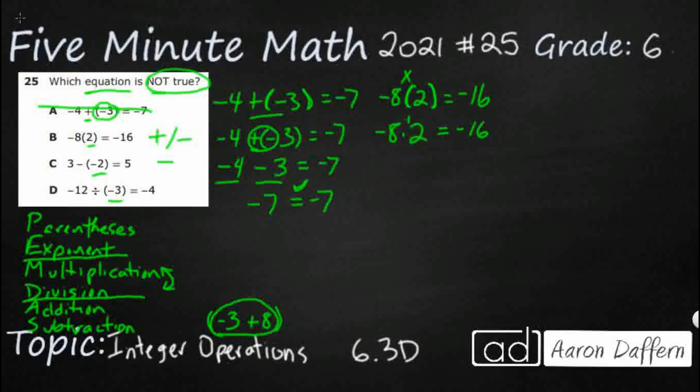This is actually a positive 2 because we don't have a negative there. So 8 times 2 is going to be 16. A negative and a positive, remember, makes a negative. So look what we have: negative 16 and negative 16, which means B works.